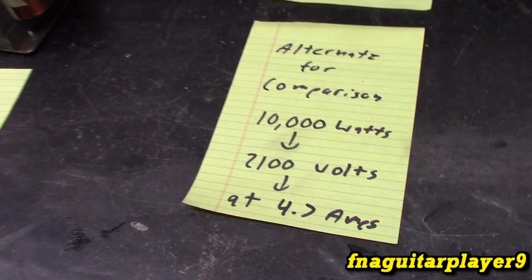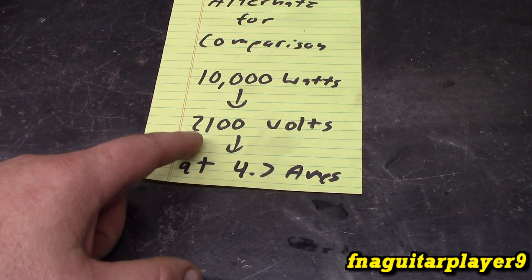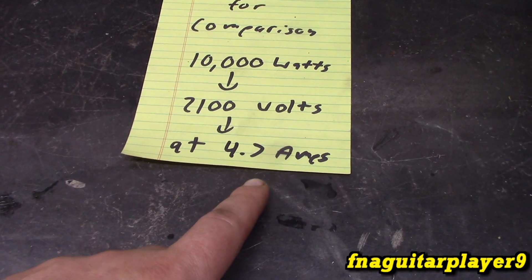So 10,000 watts divided by 120 volts equals 83 amps. So that amplifies on this. 10,000 watts divided by 2,100 volts, 4.7 amps.